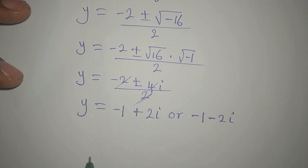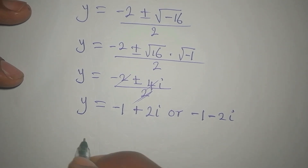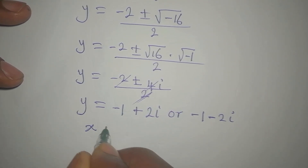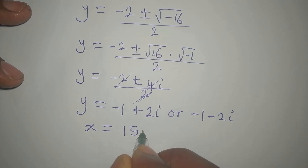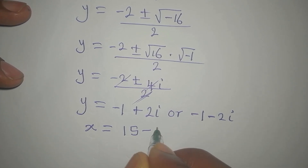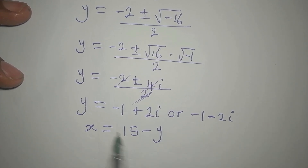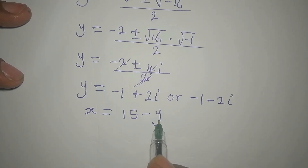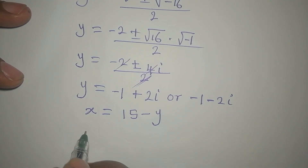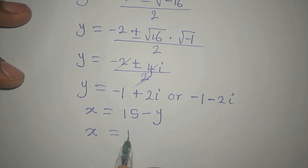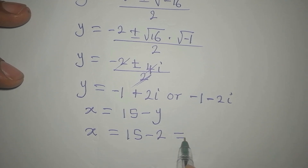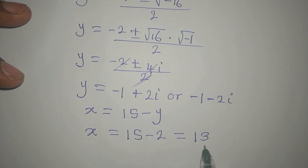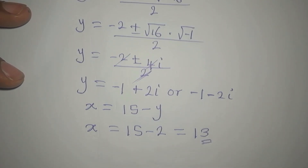Recall that X equals 15 minus Y. Using Y equals 2, we get X equals 15 minus 2, which equals 13. So one solution is X equals 13.